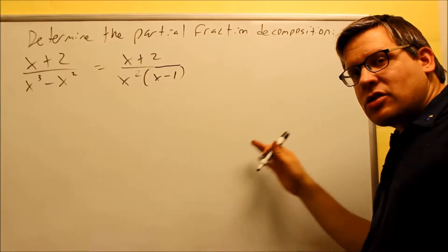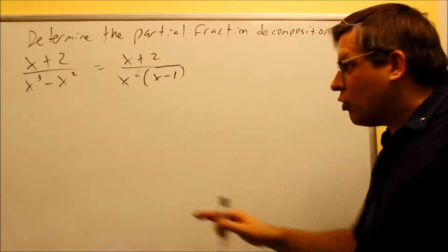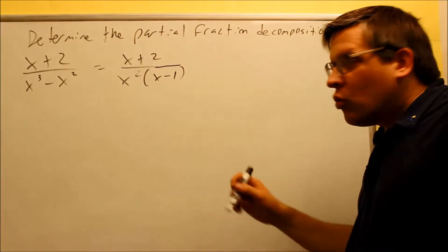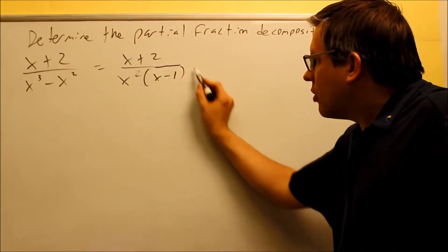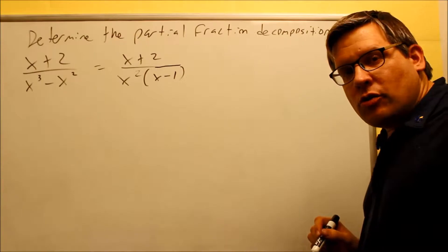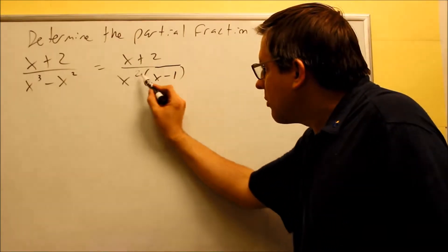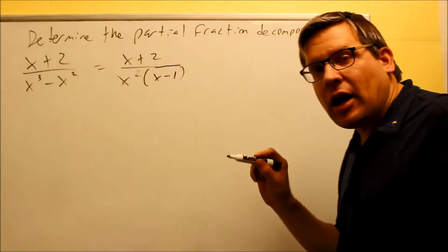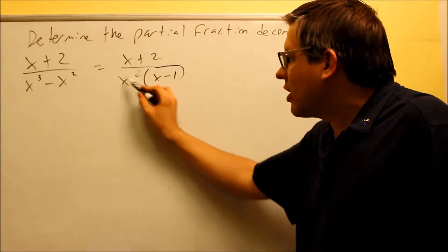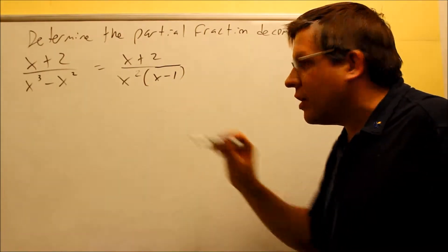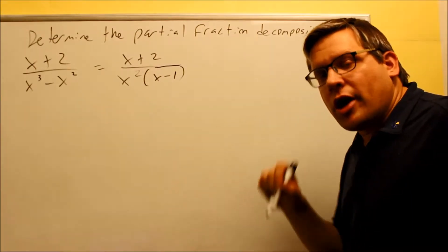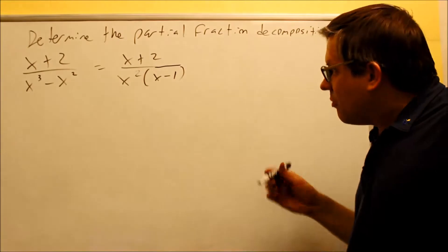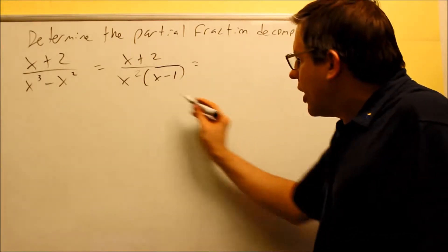Sometimes you might actually have a combination of more than one rule. In this case, you have to use rule number 1 because you have this linear factor right here, but you also want to use rule number 2 because you have something that's raised to a higher power. Anytime you have something raised to a higher power that's linear — and this can be considered linear because we can write it as x minus 0 or x plus 0 — then that's a combination of both rules.